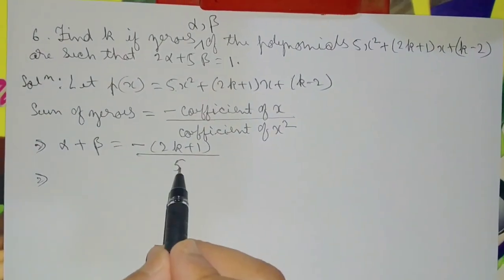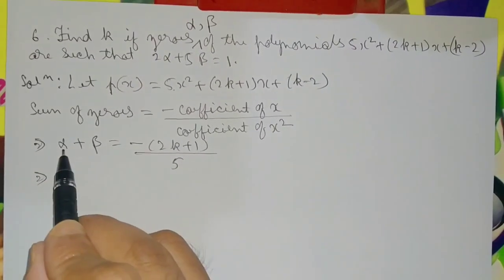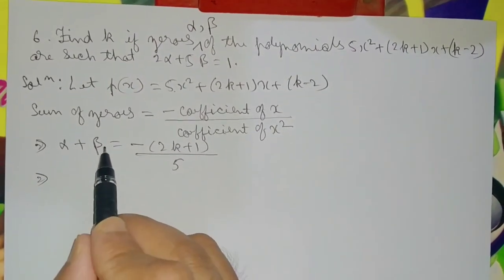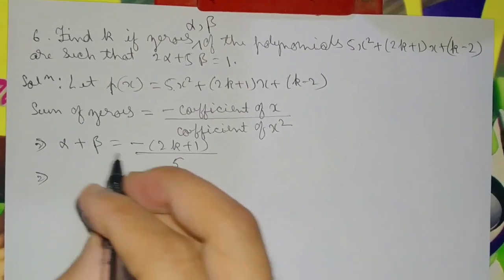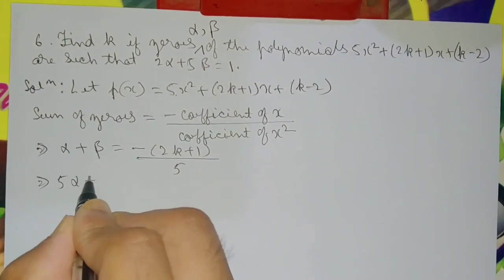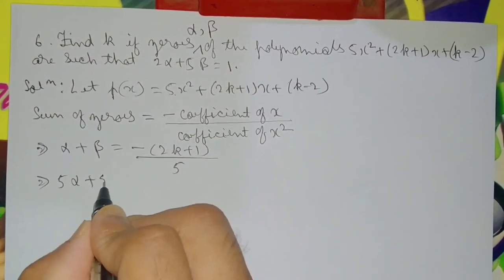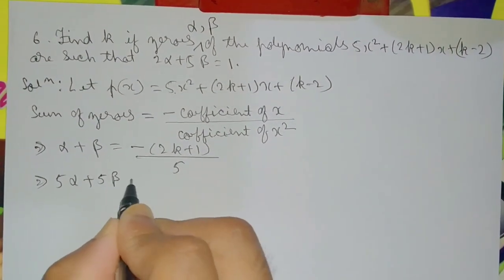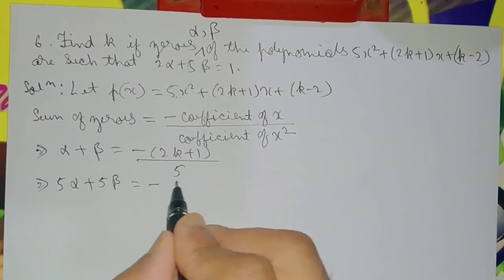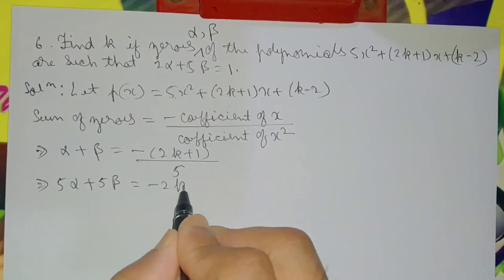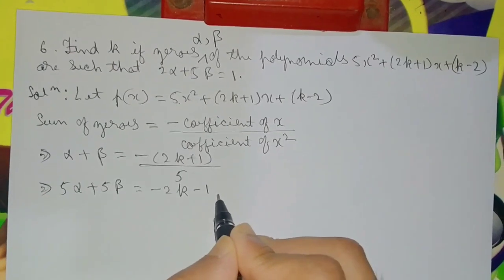Cross multiplying: 5 into alpha plus 5 into beta gives 5 alpha plus 5 beta, and this is equal to minus 2k minus 1. This is equation 1.